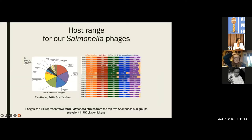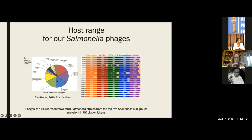When you start working with phages in animals, you need to make sure your phage product targets all of the strains of the bacteria you're trying to kill. We've been largely working on salmonella in chickens and pigs. This pie graph shows the major serotypes — different subdivisions of salmonella — that circulate in UK livestock. We definitely need phages that can target all of the large chunks of the pie.